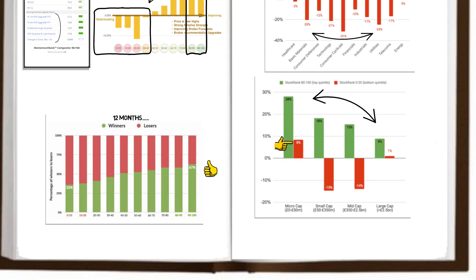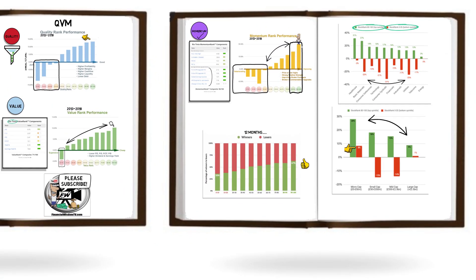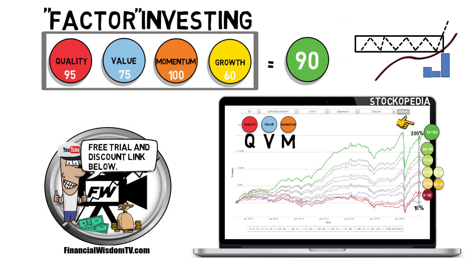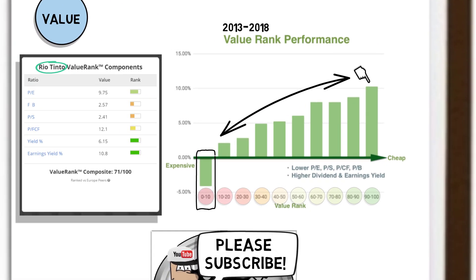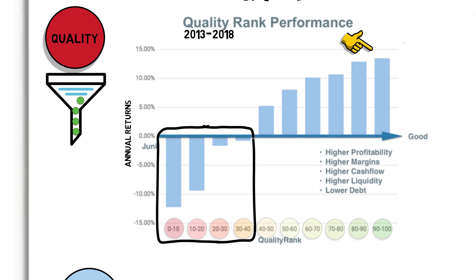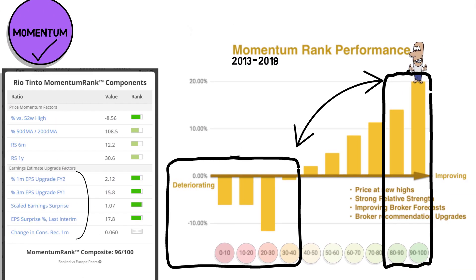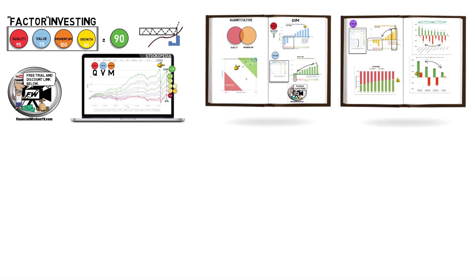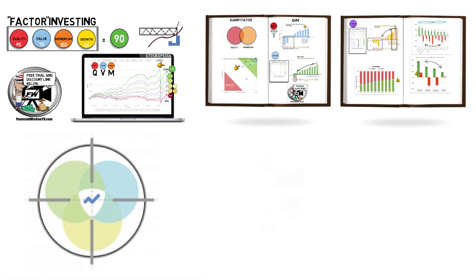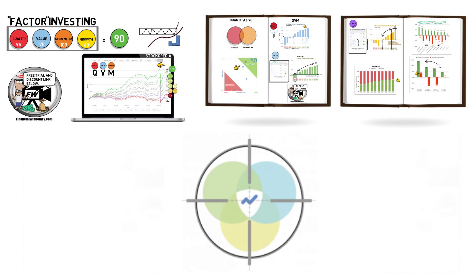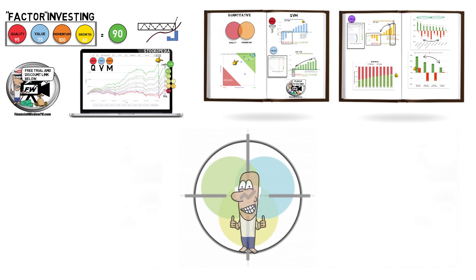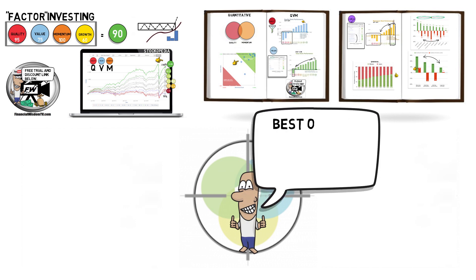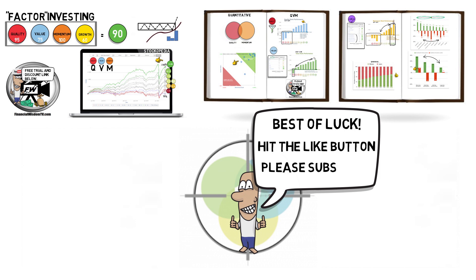Ultimately, whether you're a fundamentalist or a pure technical analyst, factor investing certainly has its place. By filtering the cheap from the expensive, the junk from the quality, or even the deteriorating from the improving, you can beat market returns significantly. And remember, rather than hunting for these best performing factors yourself, you can join the Stockopedia service which I personally use through the discounted link below. Best of luck, and as always please hit the like button, and consider subscribing to our growing community.